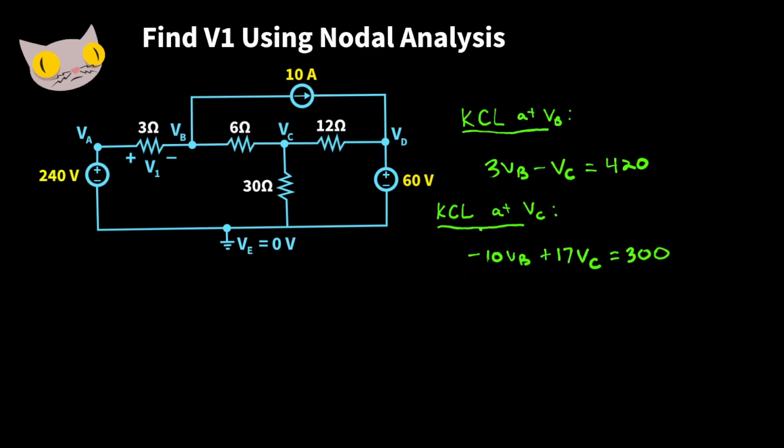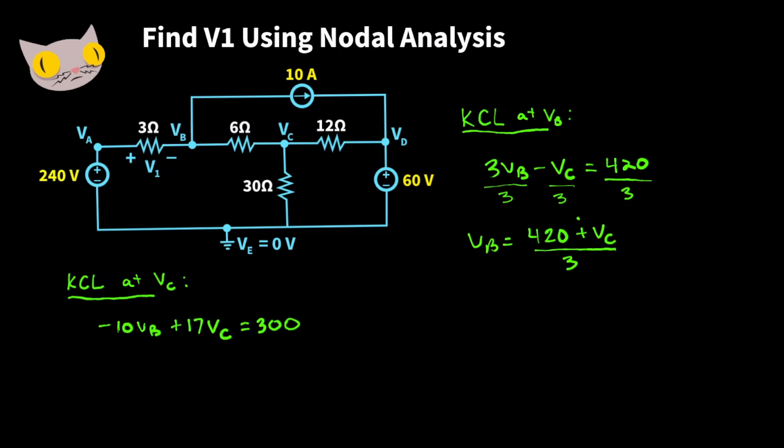Now let's try to solve for VB and VC. We'll look at this equation first. Let's try to get VB by itself. So we'll divide everything by 3, move the VC over and we get VB is 420 plus VC over 3.